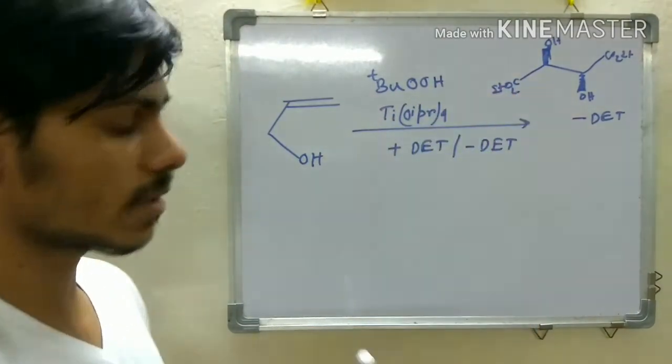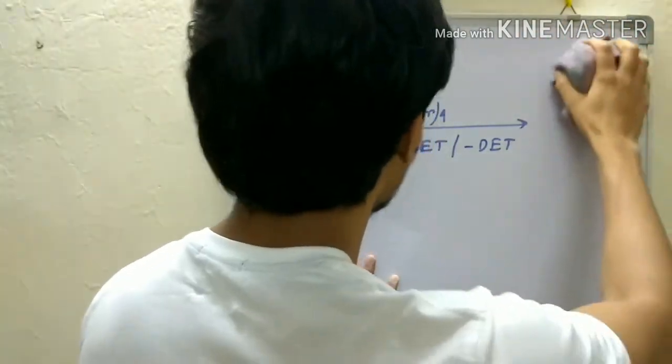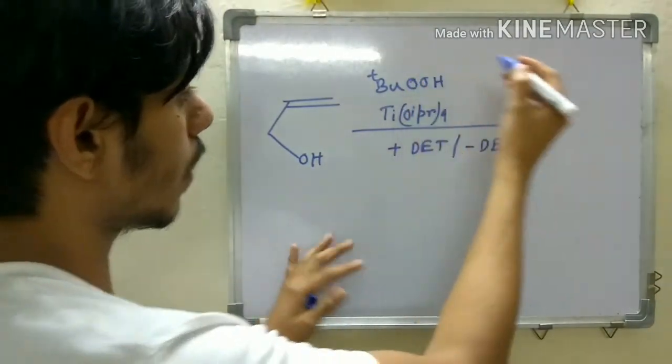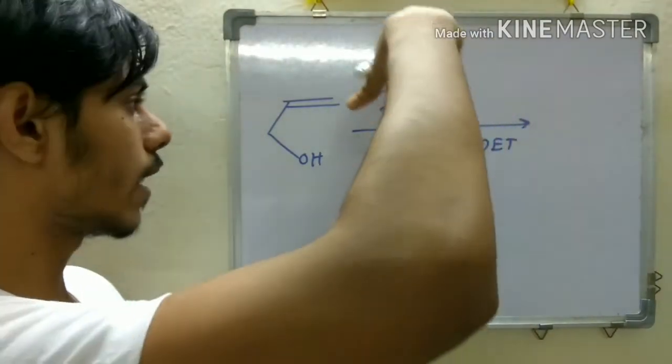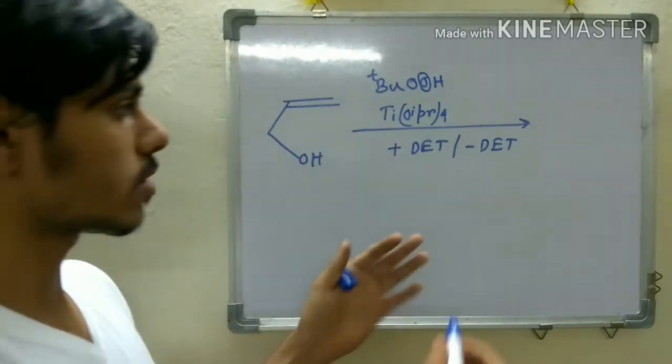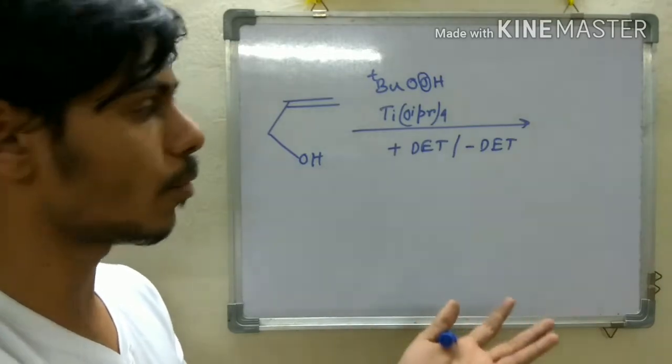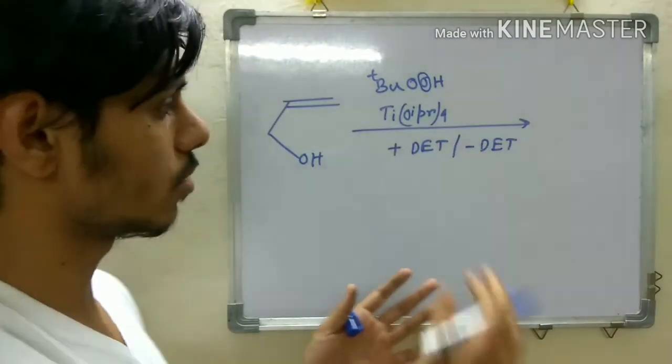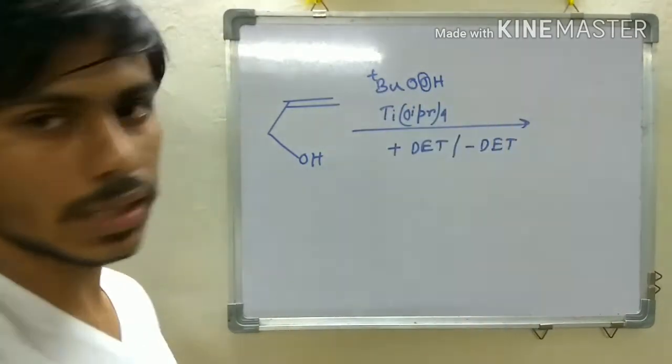In this case, tert-butyl hydroperoxide—this oxygen is actually the oxygen that will be donated in forming the epoxide. Titanium isopropoxide is working here as a framework, and plus DET or minus DET is a chiral auxiliary. This will induce the chiral environment by which you will get your selective product.